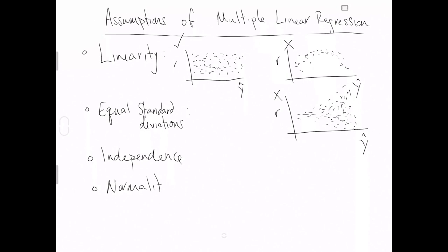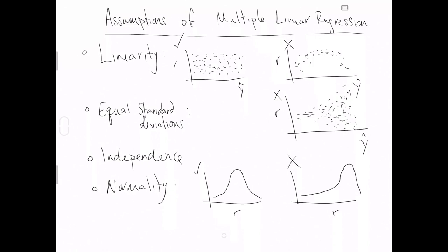The next assumption for both simple and multiple linear regression is normality. The plot to check here is to put your residuals on the x-axis and make a density plot. If your density plot looks normal, this assumption is met. If there is any kind of skew — left or right — that will break the assumption of normality.